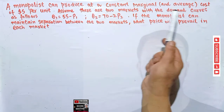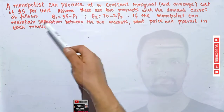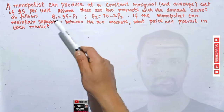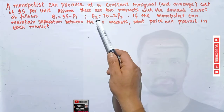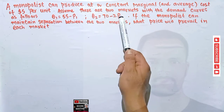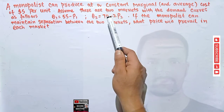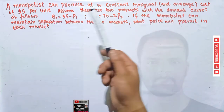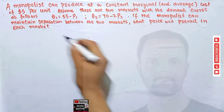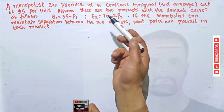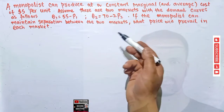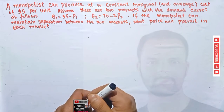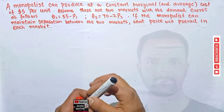Assume there are two markets with the following demand curves. For the first market: Q1 = 55 - P1, where Q1 and P1 are the quantity and price. For the second market: Q2 = 70 - 2P2, where Q2 and P2 are the quantity and price. If the monopolist can maintain separation between the two markets, what price will prevail in each market? This is clearly a price discrimination question.